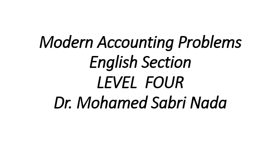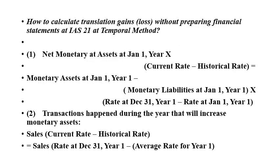For Level 4, the first subject is how to calculate translation gains or loss without preparing a financial statement at International Accounting Standard number 21, using the temporal method. The first step is to calculate net monetary assets at January 1st of year one. Net monetary assets equal monetary assets at January 1st minus monetary liabilities at January 1st.